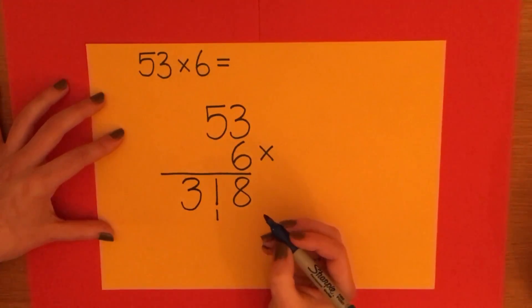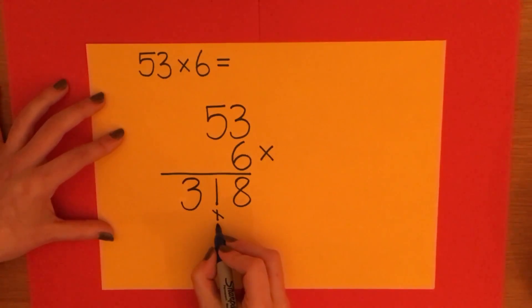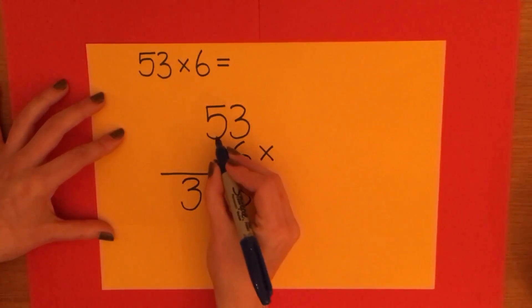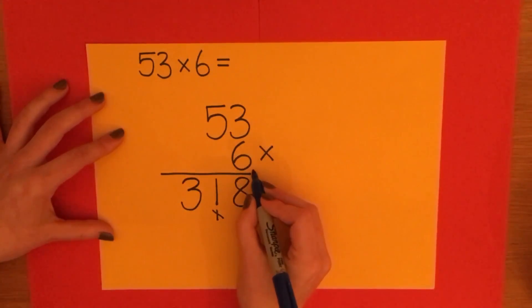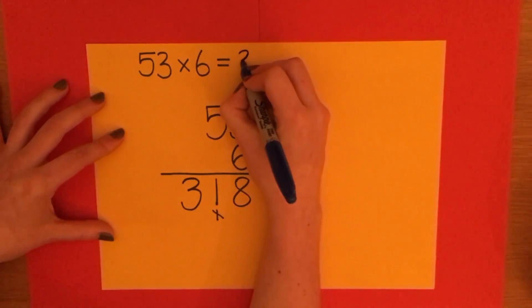Before I do anything else, I'm just going to cross out that I did definitely add to the 1 that I carried earlier. Because you may get confused if you don't do that. So the answer to 53 times 6 is 318.